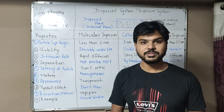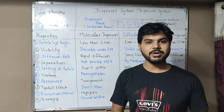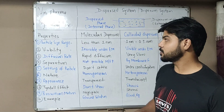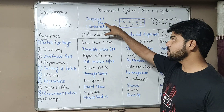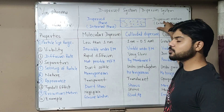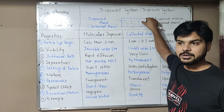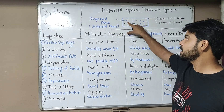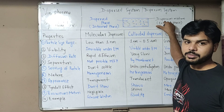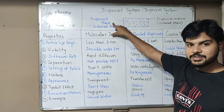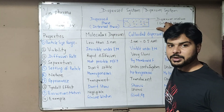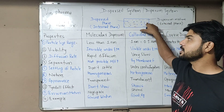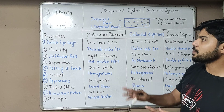We can also classify dispersed systems based on physical state. If the dispersed phase is solid and the dispersion medium is liquid, the system is a suspension. If the dispersed phase is liquid and dispersion medium is liquid, it is an emulsion. If the dispersed phase is gaseous and the dispersion medium is liquid, we call it an aerosol system.